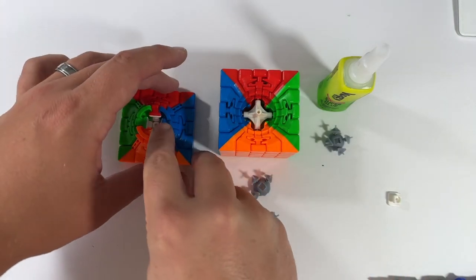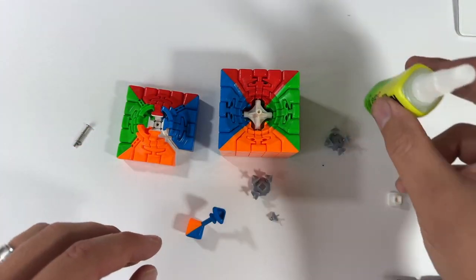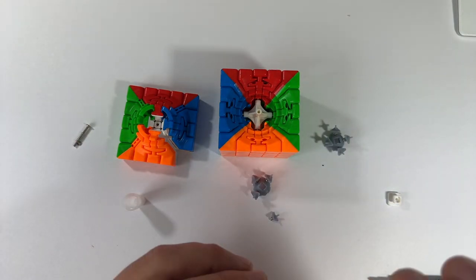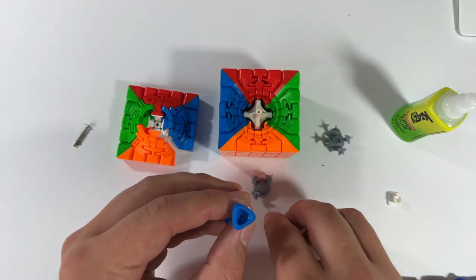Next we install the magnets into the ends of the corner stocks of the top half of the cube. Apply a dab of glue into the end of the corner stock and insert the corner magnet with the peg going into the hole.